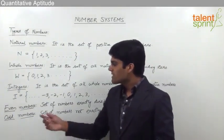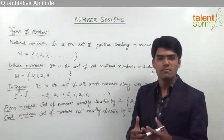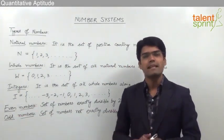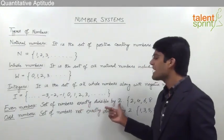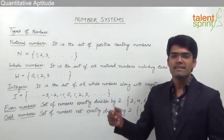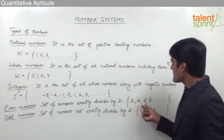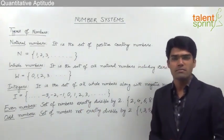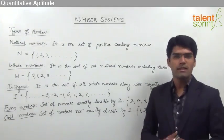The next classification is even numbers and odd numbers. Even numbers are those numbers which are exactly divisible by 2. This is a set of numbers that is exactly divisible by 2, or we can say these are the exact multiples of 2. So 2, 4, 6, 8 and so on are examples of even numbers, because these are the numbers that are exactly divisible by 2.